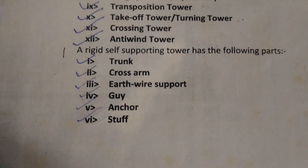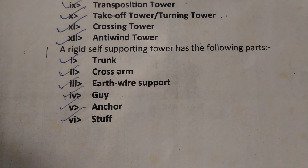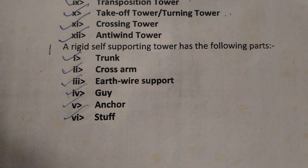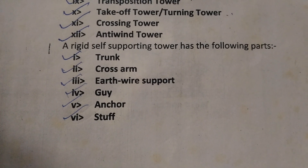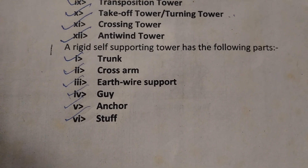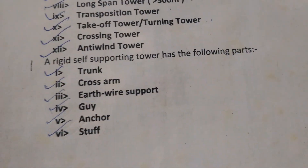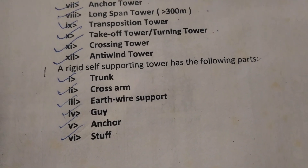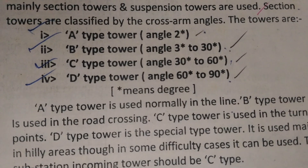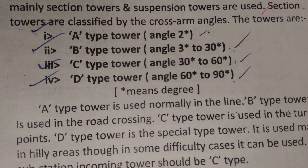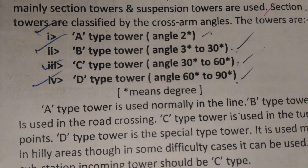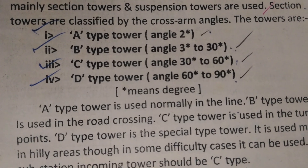Rigid self-supporting towers have the following parts: trunk, cross arm, earth wire support, support guy, and anchor stop. Mainly section towers and suspension towers are used.